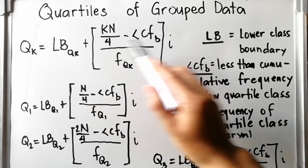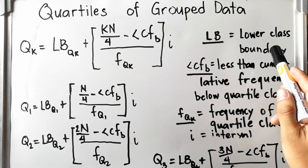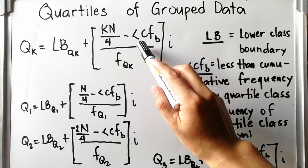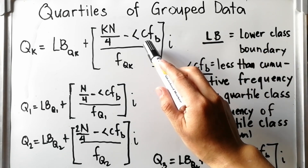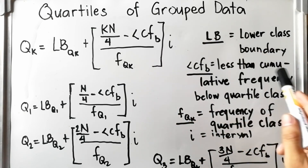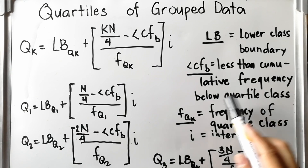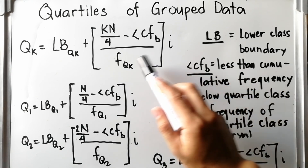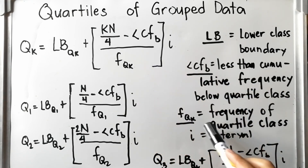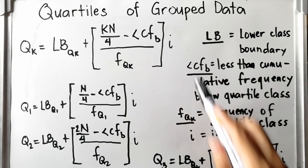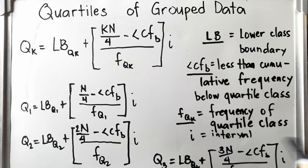LB means lower class boundary. Less than CF sub B is the less than cumulative frequency below the quartile class. F sub QK is the frequency of the quartile class. I means the class interval size.